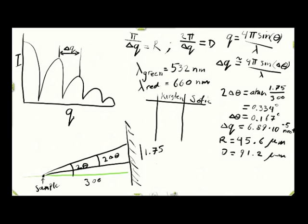So we have two samples, one from Kirsten and one from Sophie. And we have two lasers, one green laser and one red laser. So we see if we do this calculation that the first value we've just done is 91.2 micrometers for the diameter.